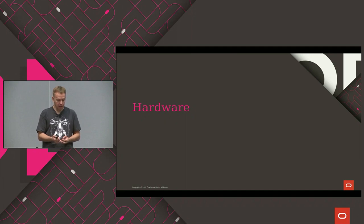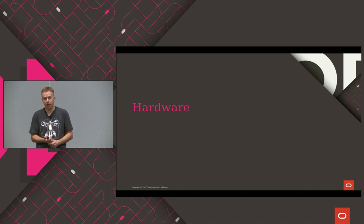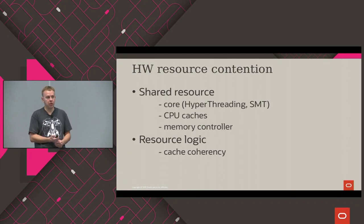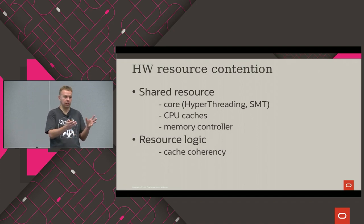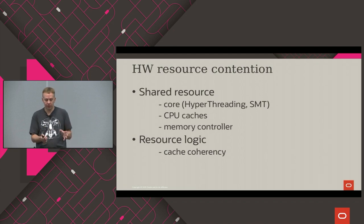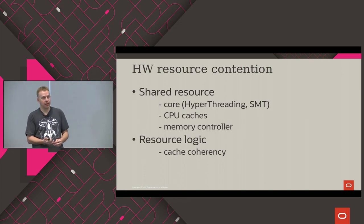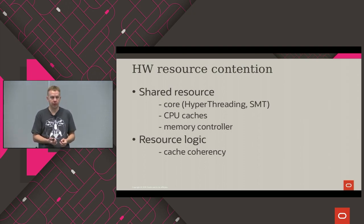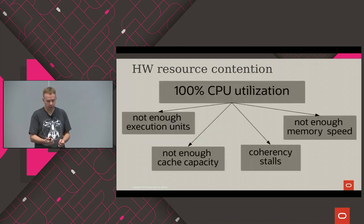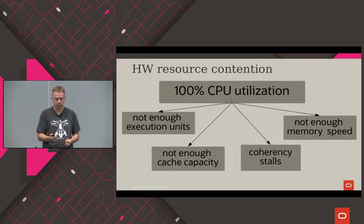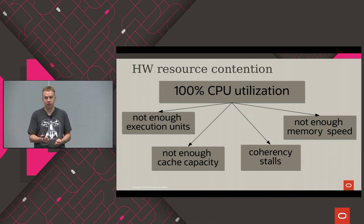I want to talk about hardware mostly, because people frequently think about locking, threading, and barriers but don't care about hardware — and from my point of view, that's a very large mistake. Hardware scalability issues fall into two categories: when parallel workers start using a shared resource and there's not enough capacity of that resource for proper scaling, and when the logic of a hardware resource like cache induces very large slowdowns. CPU utilization issues are not clear-cut — we need to understand the different parts.